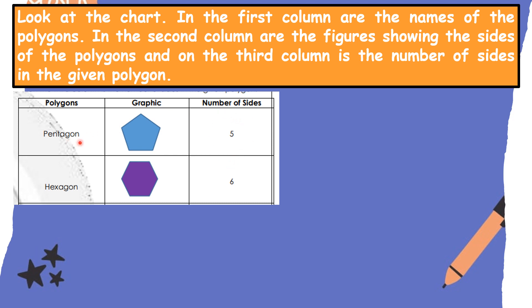For number one, we have pentagon — pentagon has five sides. Let us count: one, two, three, four, and five. The figure is correct for pentagon. Next, hexagon. Let us count: one, two, three, four, five, and six. The number of sides of a hexagon is six.